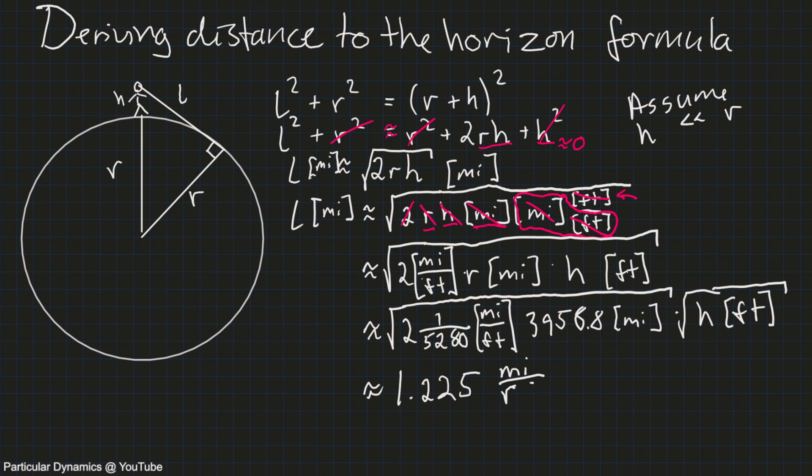And we want to keep the units so we end up with miles per root feet, multiply it by the square root of the height of the observer in feet. And that's how you get a formula for the distance to the horizon.